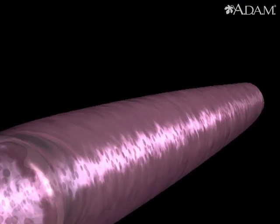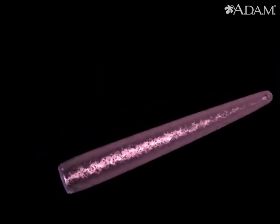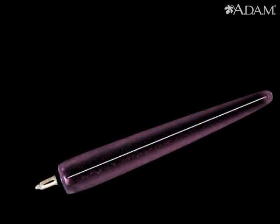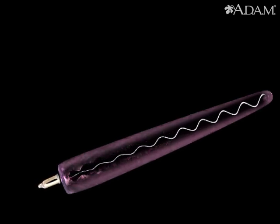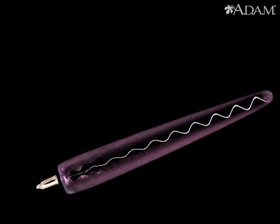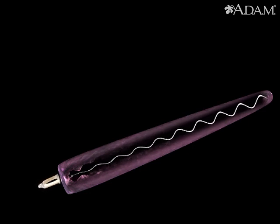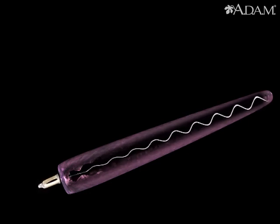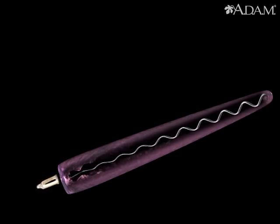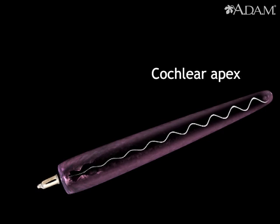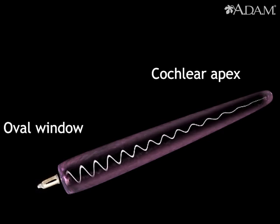Let's watch this process in action. First, the stapes rocks against the oval window. This transmits waves of sound through the cochlear fluid, sending the organ of corti into motion. Fibers near the upper end of the cochlea resonate to lower frequency sound, while those near the oval window respond to higher frequencies.